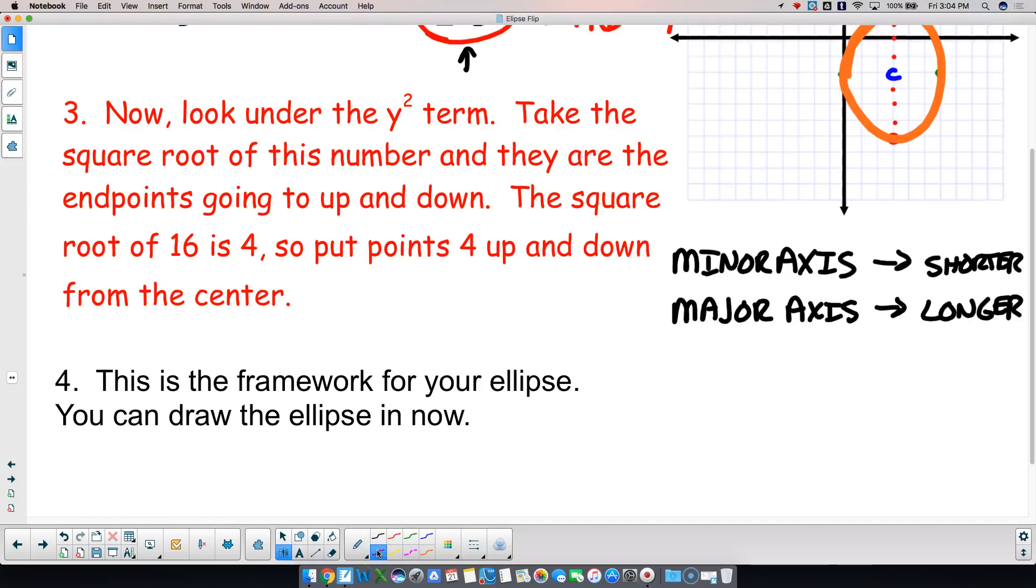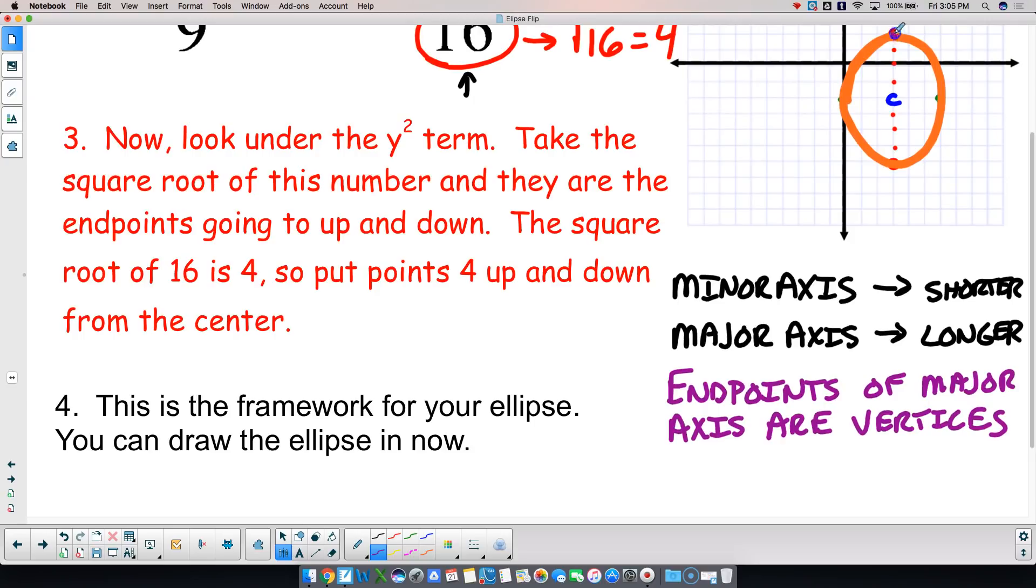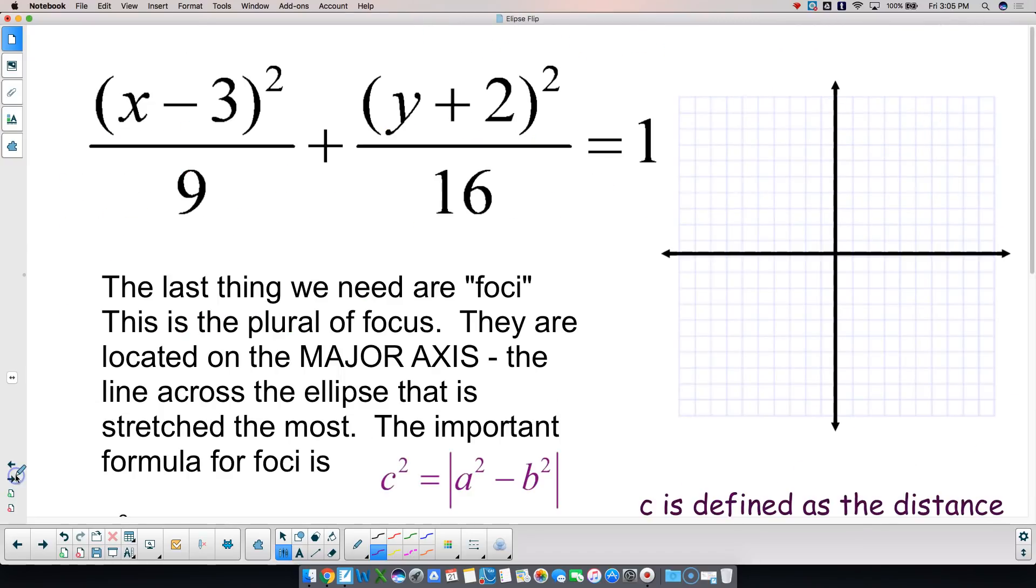Now, the end points of the major axes are called the vertices. So on this particular example, I have a vertice there, and I have a vertice there, because my major axes is vertical. So the vertical, my vertices would be at 3, comma 2, and 3, comma negative 6. So we have that. Okay?